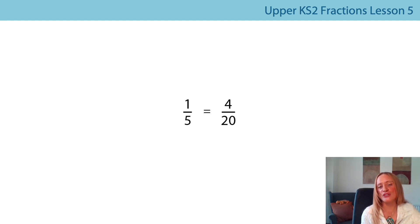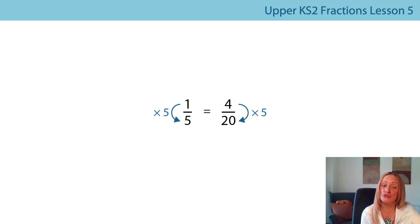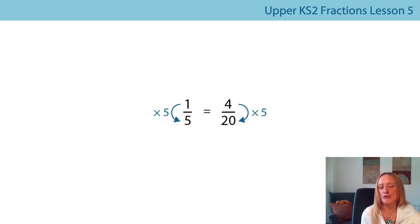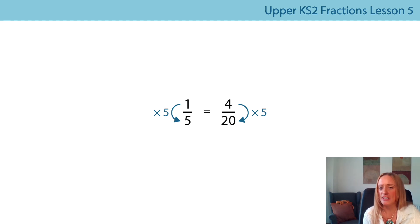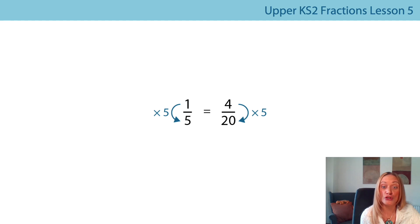I'm going to revisit some of the language we used yesterday, looking at a vertical relationship between the numerator and the denominator. Yesterday we saw that we could scale up the numerator by the same scale factor, and that would show us that our fractions were equivalent. I'd like you to take a look at the numerators in both fractions — can you see a relationship between them? And have a look at the denominators as well. Now, yesterday we spoke about additive relationships — we can look at those numerators and say, if I add three to one I get four, and if I add 15 to five I get 20. But we said we weren't looking at additive relationships when comparing equivalent fractions; we needed to look at multiplicative relationships.